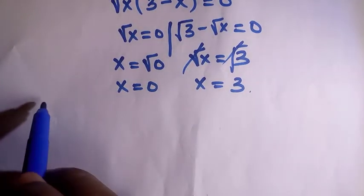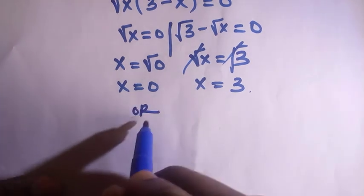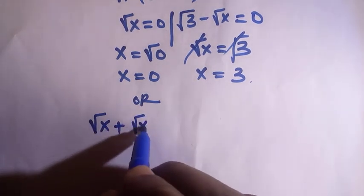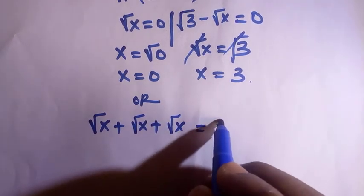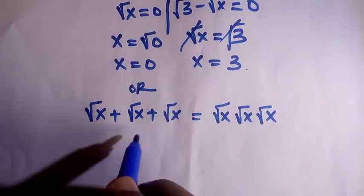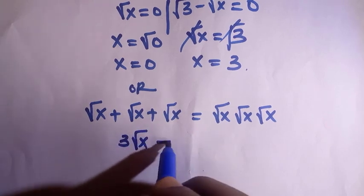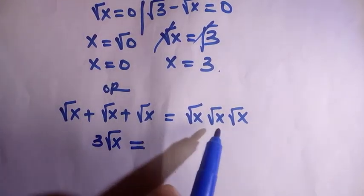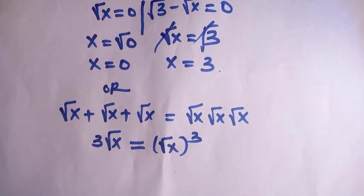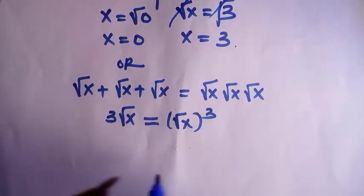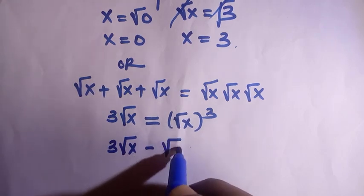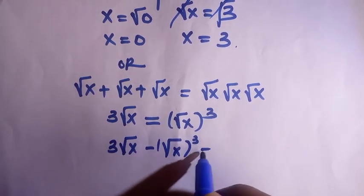For the second method: the question has √x + √x + √x = √x · √x · √x. The left side is still 3√x. For the right side, multiplying √x three times gives (√x)^3. Transferring (√x)^3 to the left side gives: 3√x − (√x)^3 = 0.